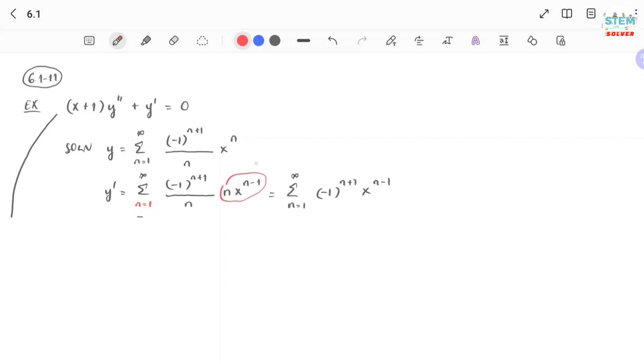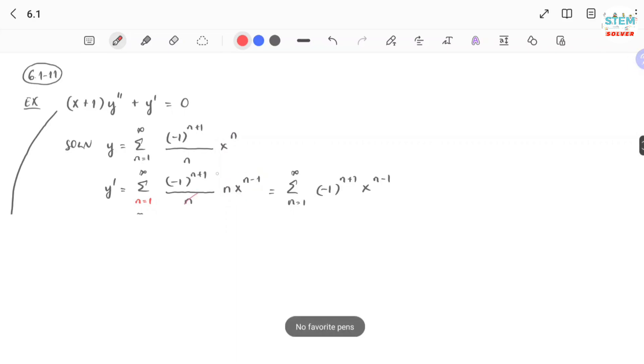So I have n times x^(n-1). And then if I simplify it, because those are constants, I'll get this. Then take the second derivative. Before I go to the next step, why do I have n=1 in red here? Because you cannot just rewrite that one.